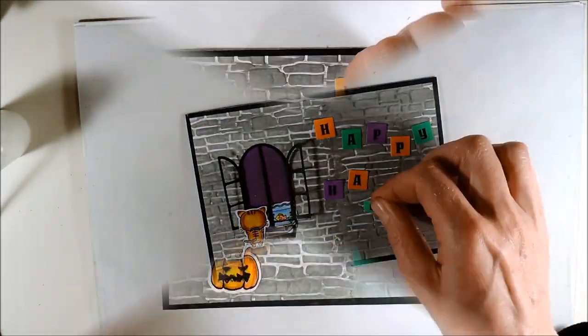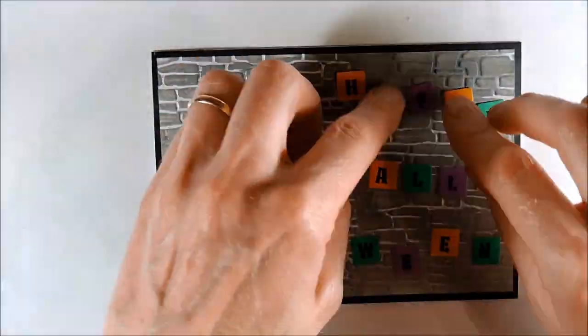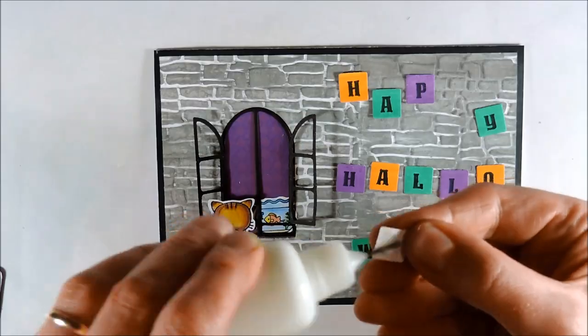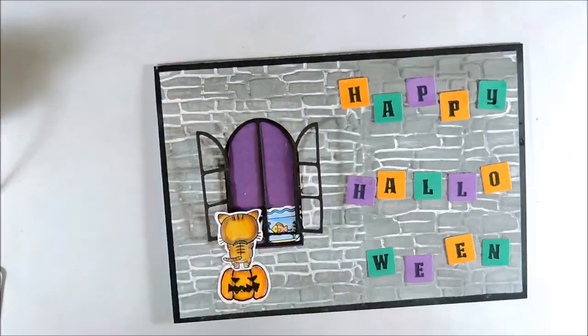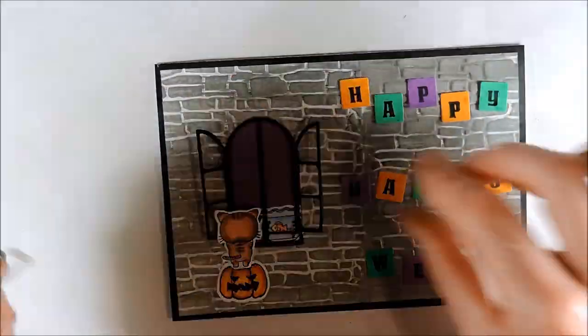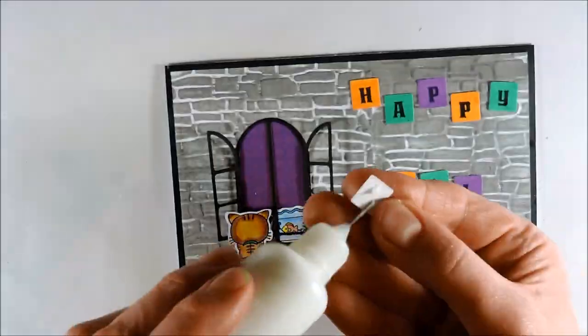Now I am finding the right position for the letters. As you can see, I have lined up the colors in the same order: orange, green, purple, and so on. Then I am applying the letters with wet adhesive.